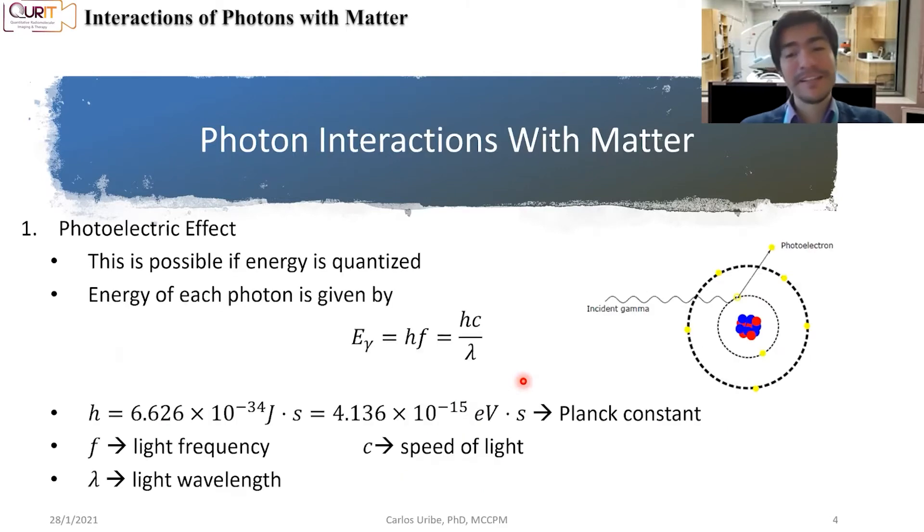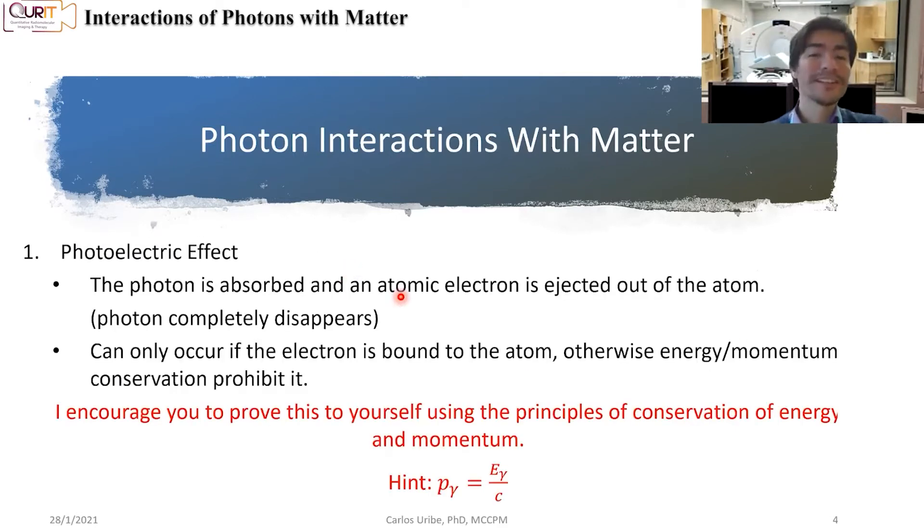Now keep in mind, when we talk about photoelectric effect, the photon is completely absorbed and the atomic electron is ejected out of the atom. The photon completely disappears. This can only occur if the electron is bound to the atom. Otherwise, energy and momentum conservation are prohibited.